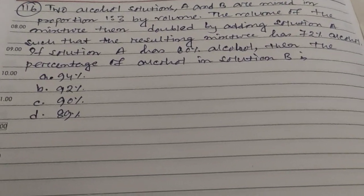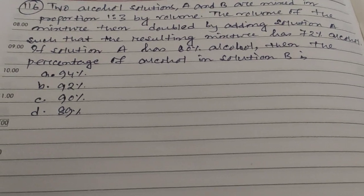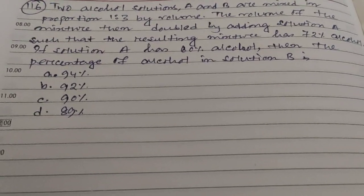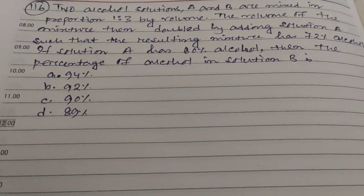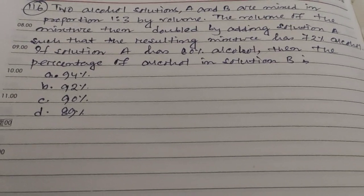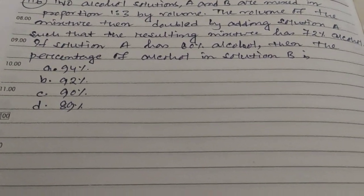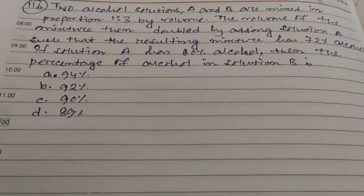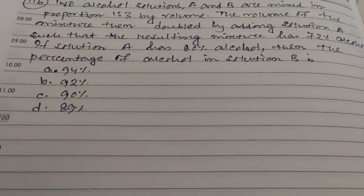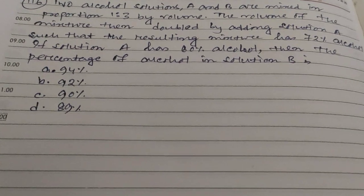Hi students, this is question 116. The question is: two alcohol solutions A and B are mixed in proportion 1 is to 3 by volume. The volume of the mixture is then doubled by adding solution A such that the resulting mixture has 72% alcohol. If solution A has 60% alcohol, then the percentage of alcohol in solution B is what?